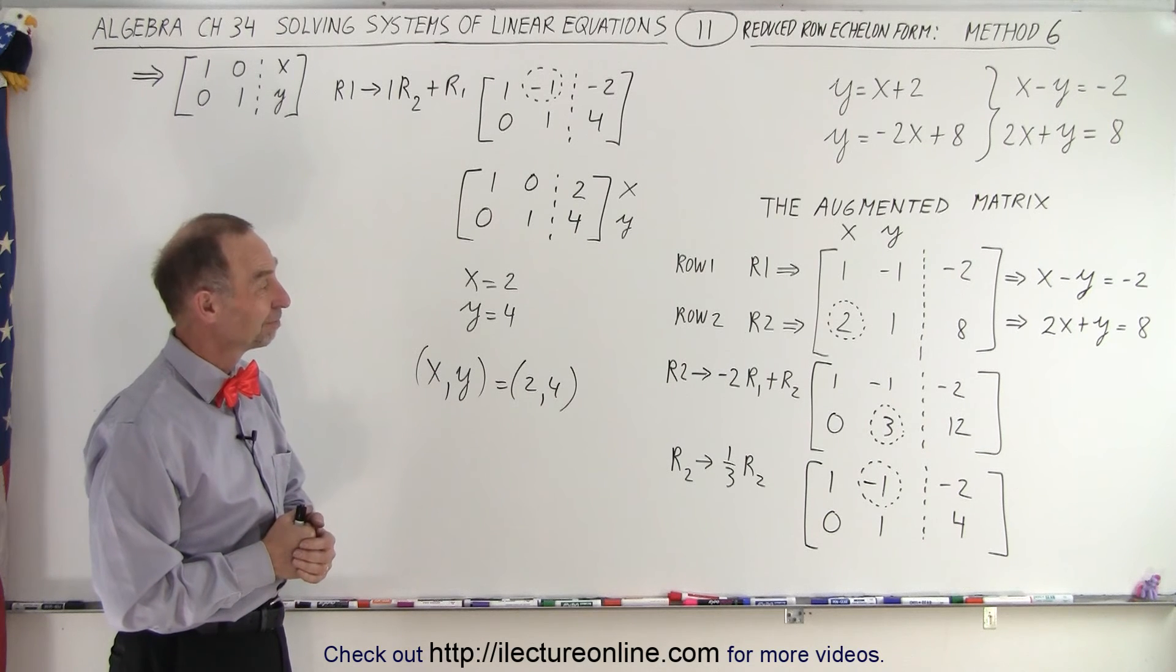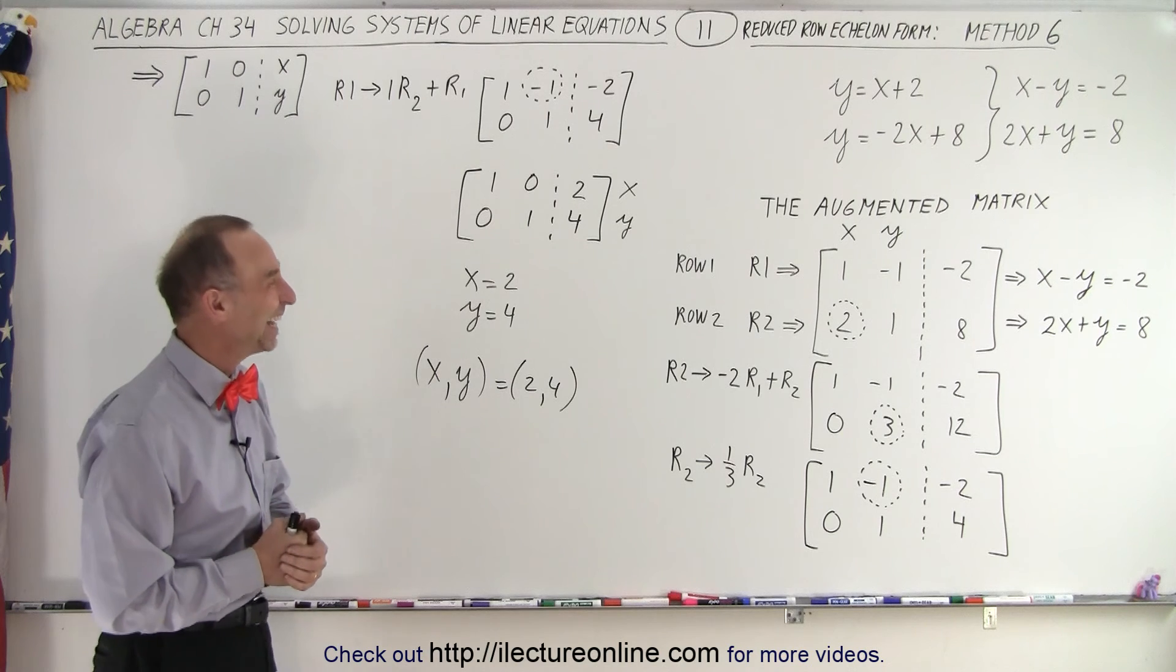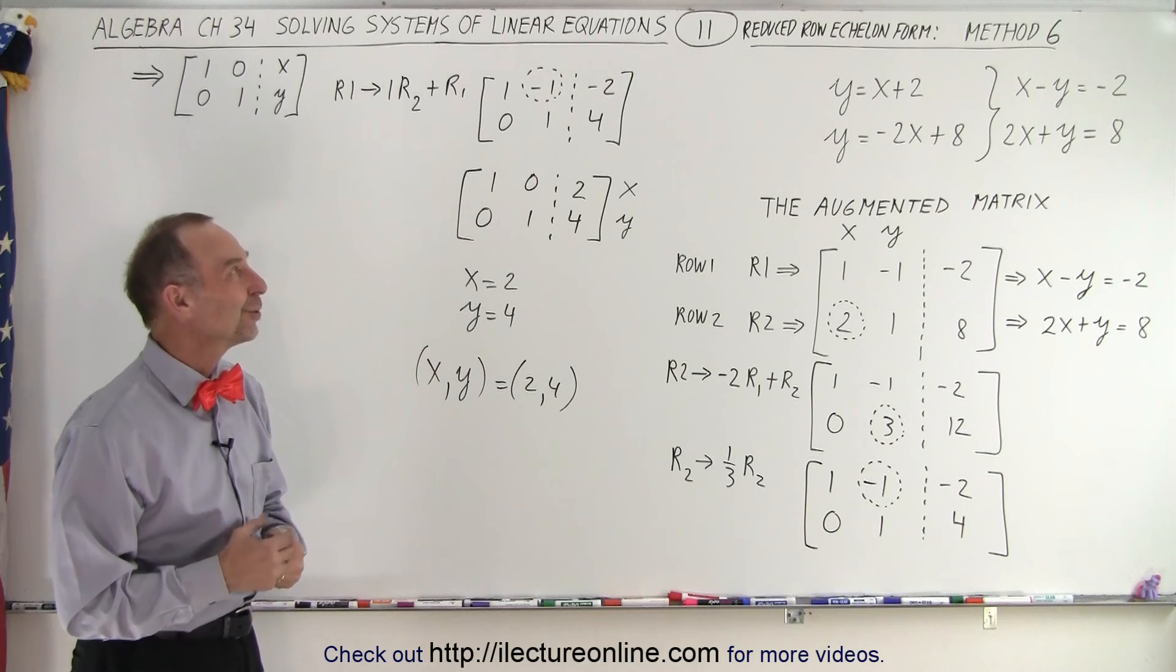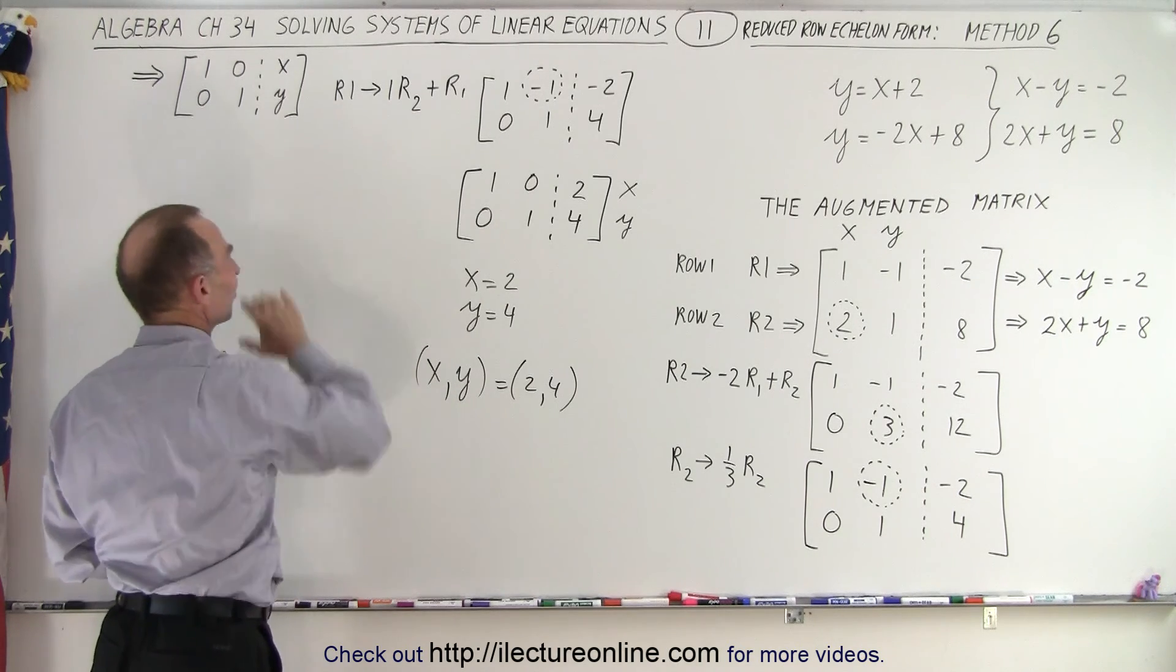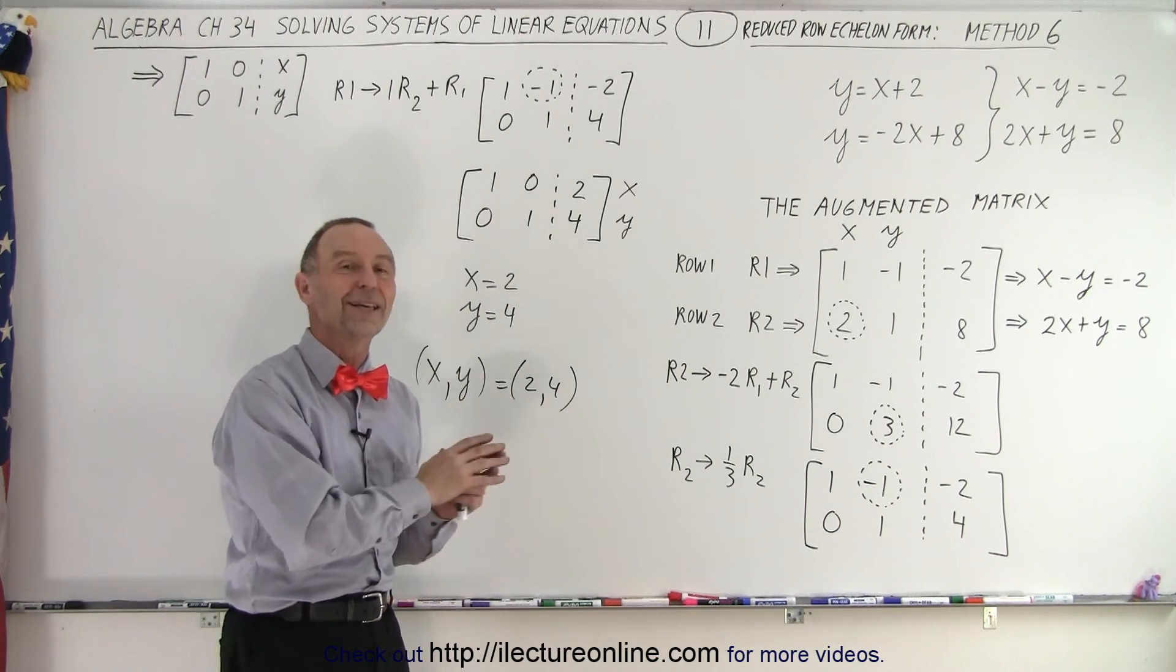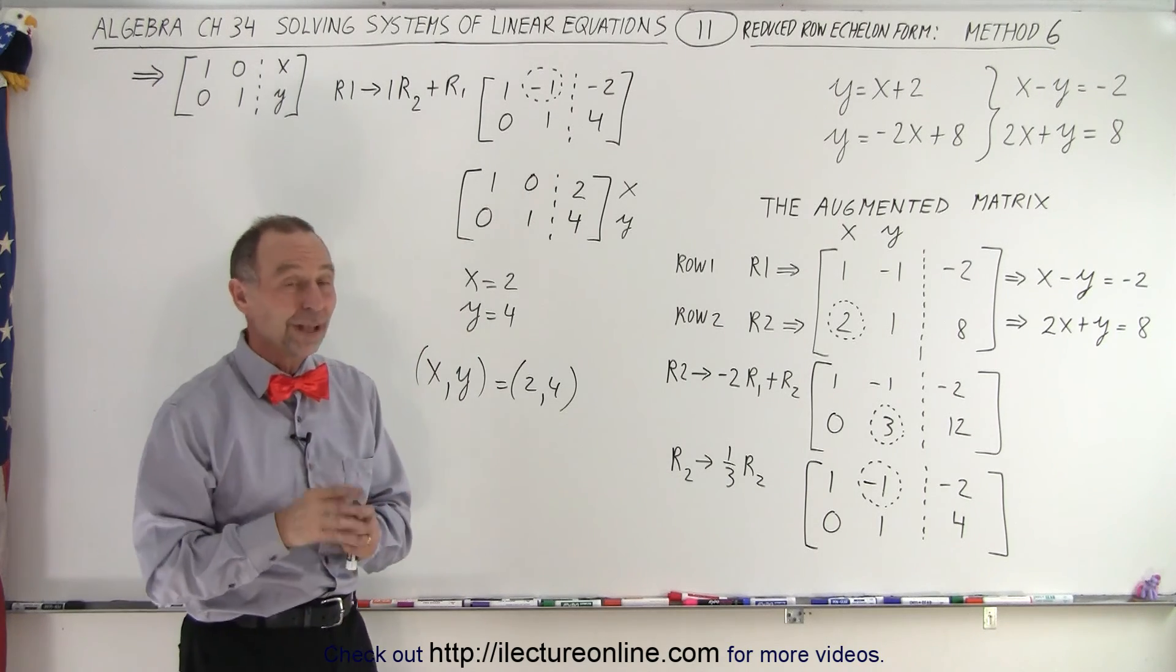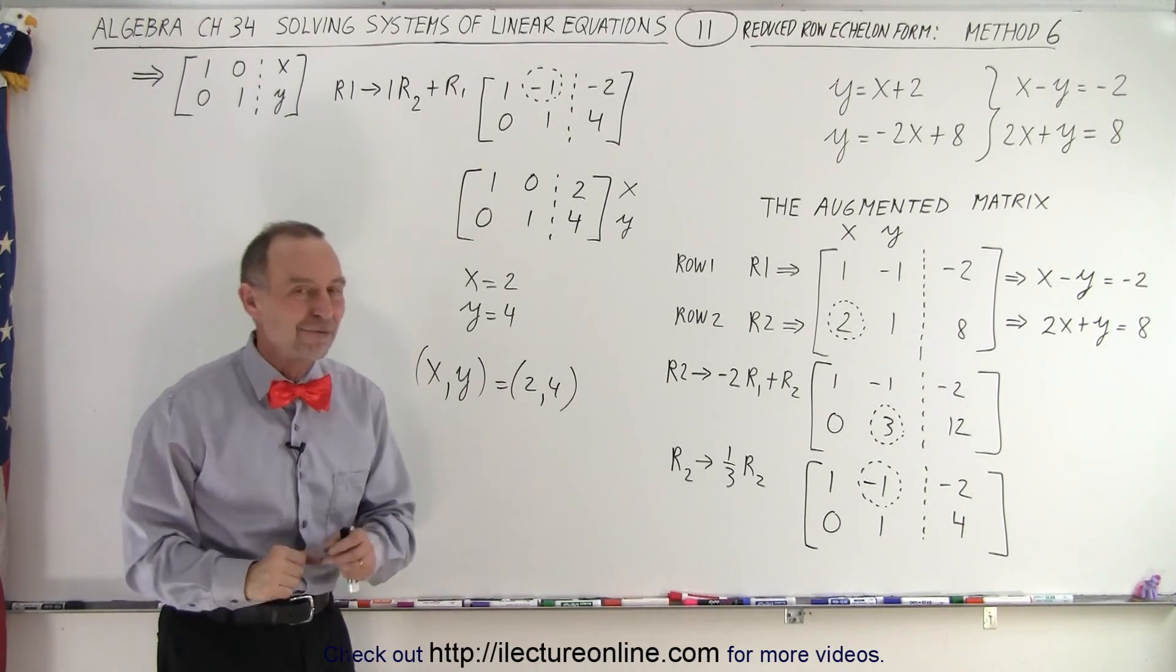The way I get confused is that I always feel that this is the row echelon form, and the previous method is the reduced row echelon form because there's less of it. You don't go all the way. But it doesn't work that way. They call this the reduced row echelon form because they reduce it even further.